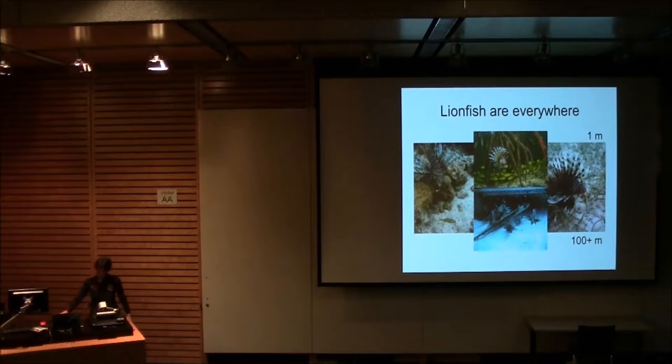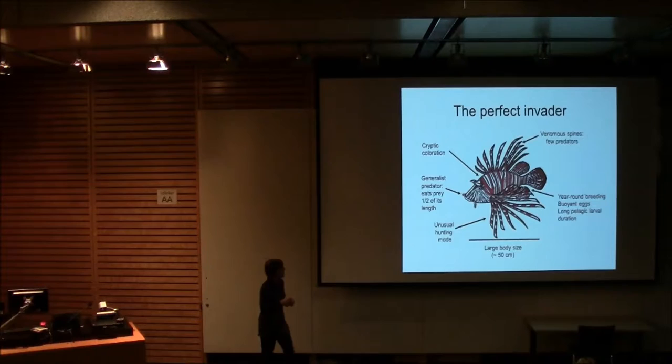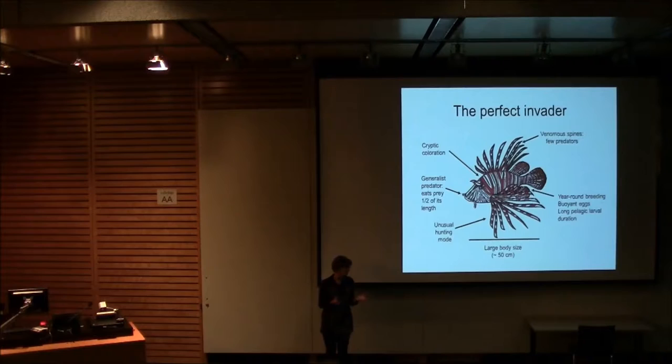Now, if you were to design an invader of a fish, you'd probably design something like a lionfish. It's got a bunch of different characteristics that are superb if you want to design an invader. Let's start with their body size. They're pretty large, up to 50 centimeters, which then means that they can eat a large range of things. They have a generalist diet. They can eat things that are almost up to half their size. They have a relatively cryptic coloration. They're also venomous, so their dorsal spines and their anal spines are venomous, which means they don't have very many natural predators.